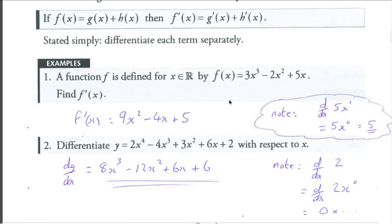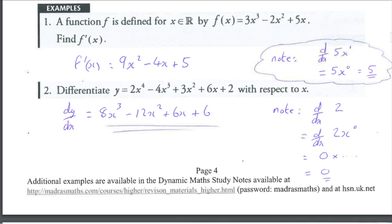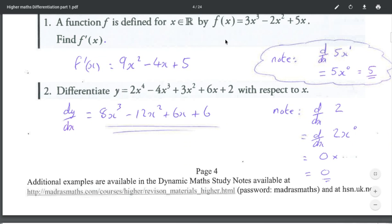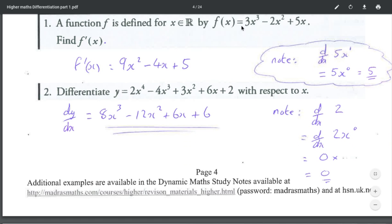If we have more than one term we differentiate each term individually. So here we have f(x), find f'(x). I'm going to differentiate the first term. So 3 to the front, so 3 multiplied by 3 is 9. Reduce the power by 1, 9x squared. Minus 2x squared in f(x), so bring the power to the front. So minus 2 times 2 is 4. Drop the power by 1 would be x to the power 1 which is just x.